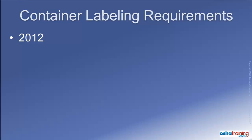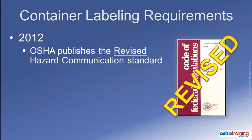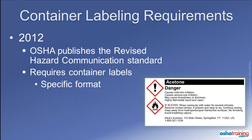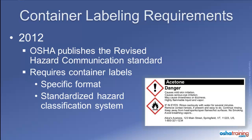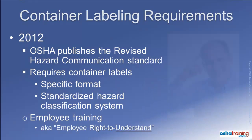So in 2012, OSHA revised their Hazard Communications Standard, and a major part of that revision was how containers had to be labeled. While manufacturers still have to put labels on their containers, now that information has to follow a specific format, and there is a standardized hazard classification system that must be utilized on container labels. The HazCom Standard also requires employers to train their employees on how to read and understand the new GHS labeling system, shifting the standard from Employee Right to Know to Employee Right to Understand.